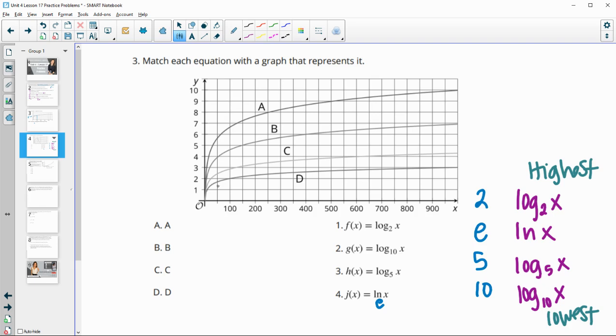Lowest growth rate to highest for exponential. So that means that this is the highest to lowest for the logarithms. So that means that this top graph is going to go with log base 2 of X. So this is going to be graph A, this is going to be graph B, C, and D. And so A goes with log base 2, B goes with the LN, C goes with log base 5, and D goes with log base 10.